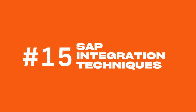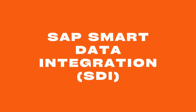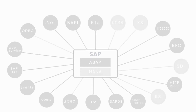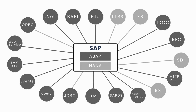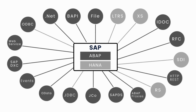Let's now talk about SAP Smart Data Integration, simply SDI. SDI is a powerful tool that enables organizations to access and integrate data from various sources. With this solution, users can easily connect to different data sources such as databases, cloud storage, and web services, and transform and merge the data for analysis and reporting.